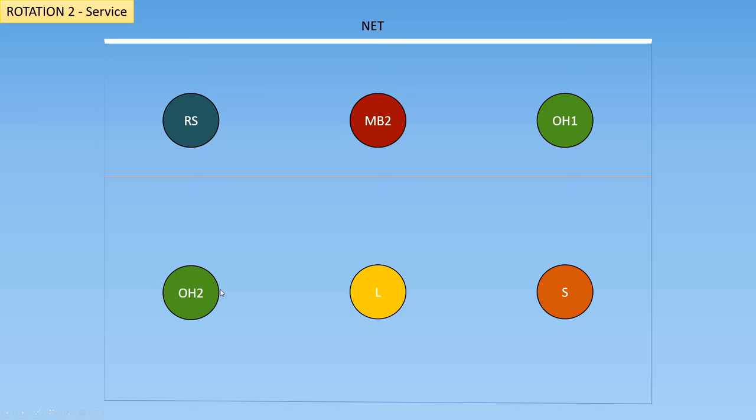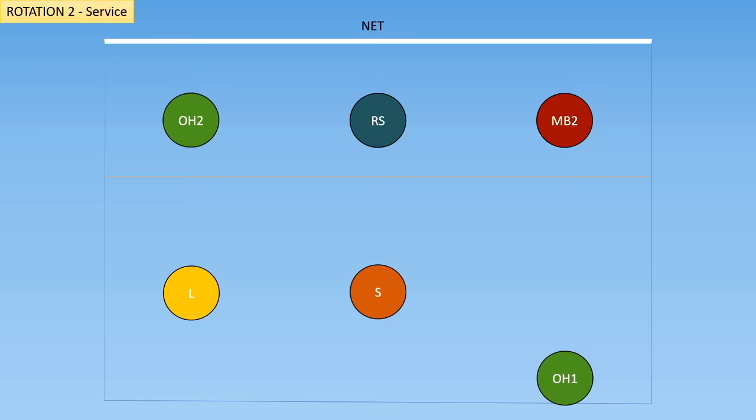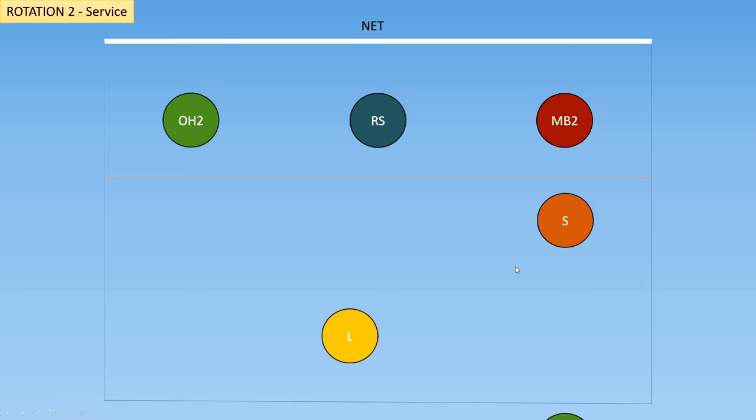Now we've won the point and it is our time to serve. All of the players will rotate by one position, and the outside hitter will now get ready to serve. Because the outside hitter is not on the court, the setter can push all the way to their base position, and the libero can also get to their base position right away. In the front row, the middle blocker will get to the middle, and the right side will get ready to move to their base position in the front right. As soon as the ball is contacted, the players are free to release and get to their base positions.